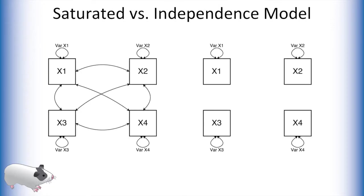Each of these fit indices relies on models like the ones you see here. In this case, assume we are modeling four manifest variables. I have omitted the means paths in these models for ease of explanation, but in practice they are still estimated. The model on the left is known as the saturated model. This model is theoretically the best fitting model possible to our data — it models all possible co-variation in our dataset. While accurate, saturated models get very complex very quickly, and we would like to simplify that complexity somewhat.